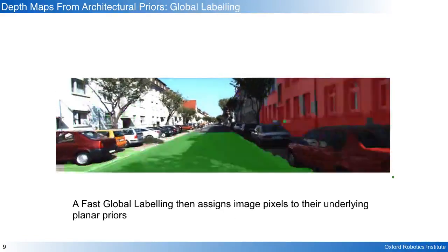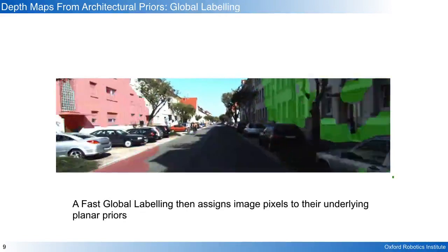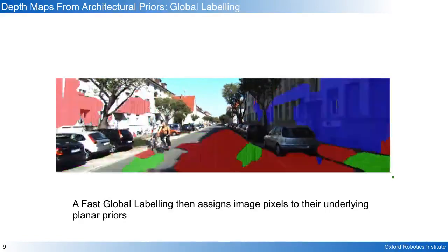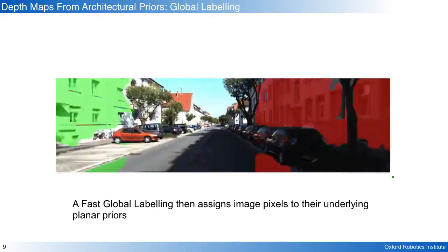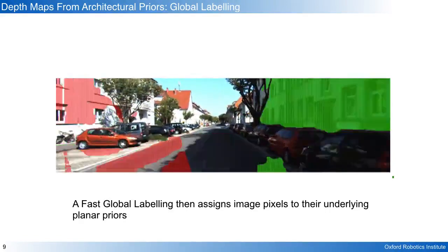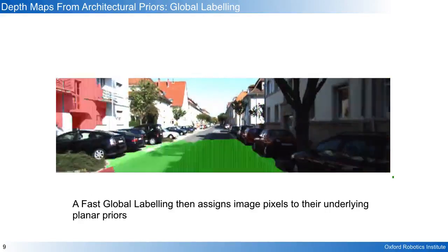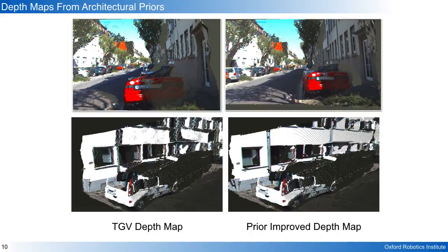It then remains to label the image pixels according to their membership to the planar priors. This is performed via fast energy minimization over the photo-consistency cost in multiple views. From the labeling, a prior improved depth map is revealed.